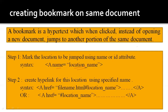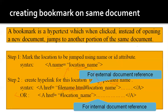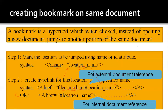The next step is to create a hyperlink for this location using the specified name. We have two options: for an external document reference, we write a href equal to the full web page URL followed by hash and the location name. And if it is present on the same document, then we can simply write a href equal to hash location name.